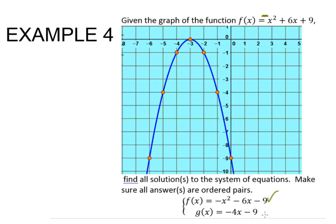So in order to find the solution, we need to graph this one. We're going to take g of x equals negative 4x minus 9, and we're going to graph it. So we need to know the slope and my y-intercept b. My slope is going to be negative 4 over 1. My y-intercept b is going to be negative 9.